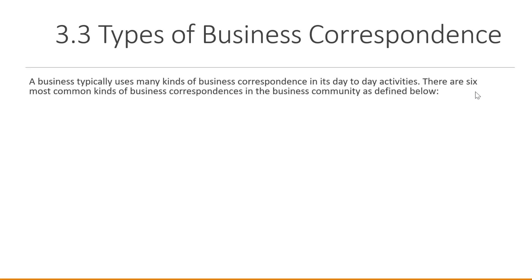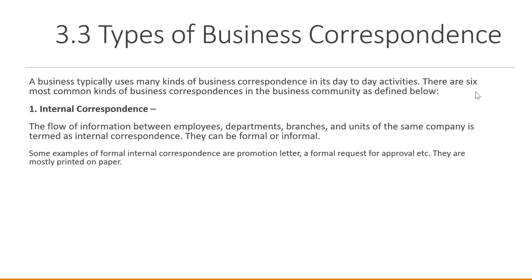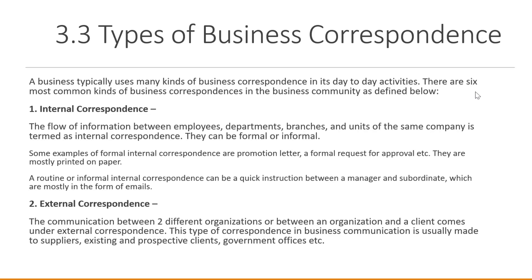Types of business correspondence — a business typically uses many kinds in its day-to-day activities. There are six most common kinds. Number one is internal correspondence: the flow of information between employees, departments, branches, and units of the same company. They can be formal or informal. Examples of formal internal correspondence include promotion letters and formal requests for approval. Routine or informal internal correspondence can be quick instructions between a manager and subordinates, mostly in the form of emails.